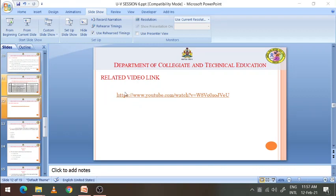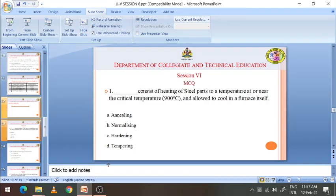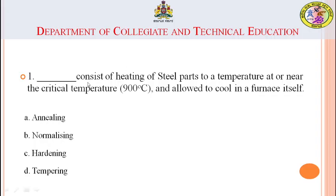Now let's move to multiple choice questions. Question 1: The blank process consists of heating steel parts to a temperature at or near the critical temperature, and then allowing them to cool in a furnace itself. The options are annealing, normalizing, hardening, and tempering. The answer is annealing.